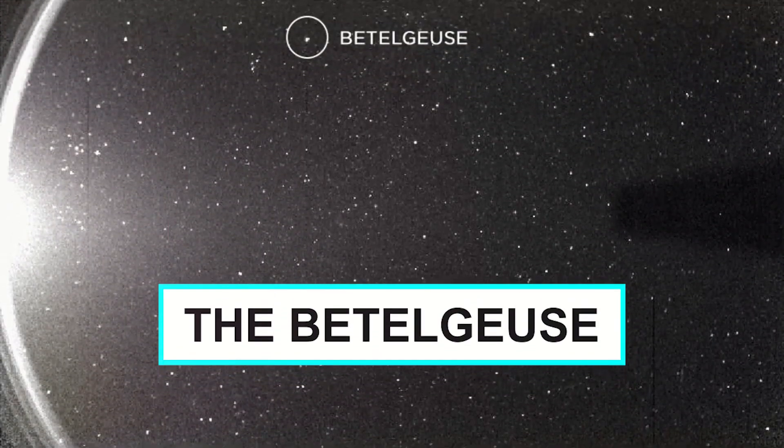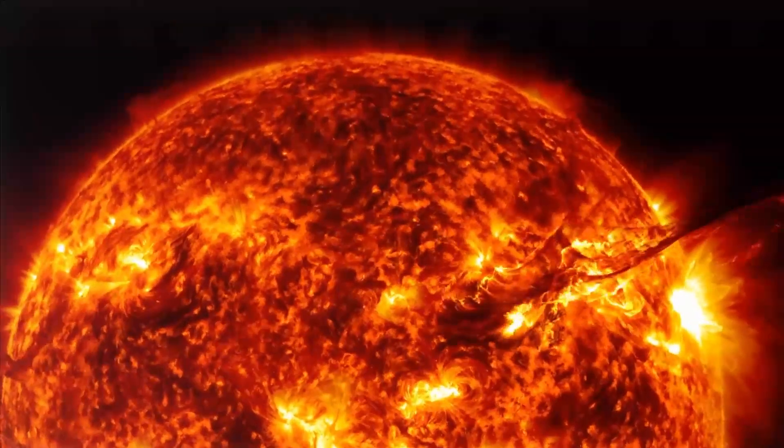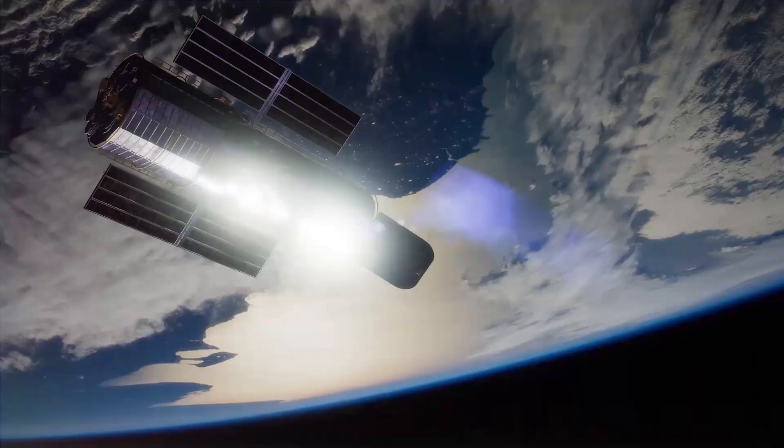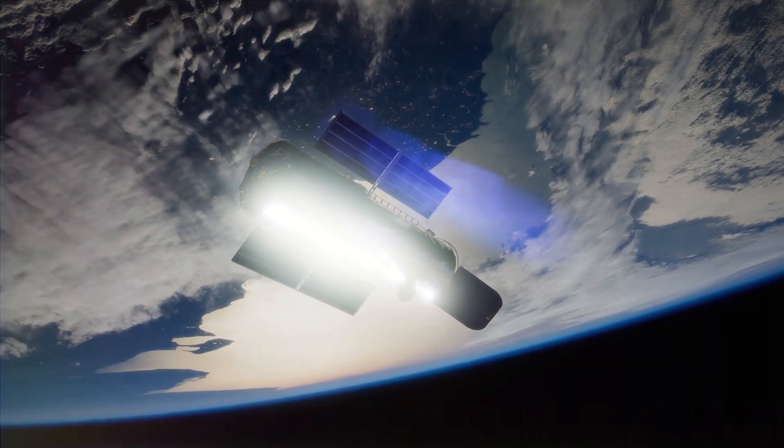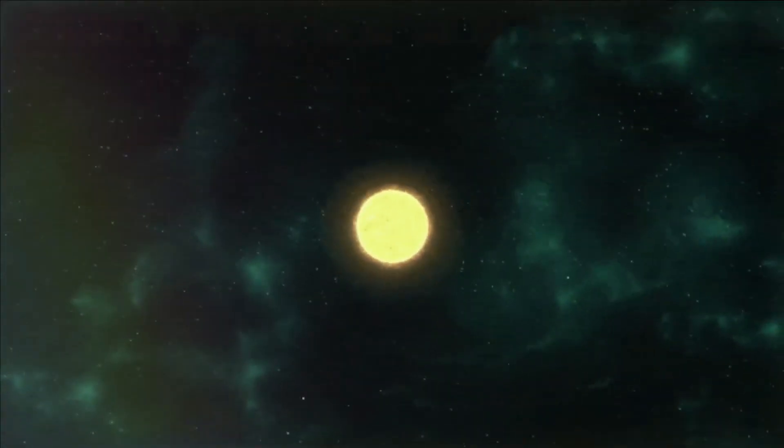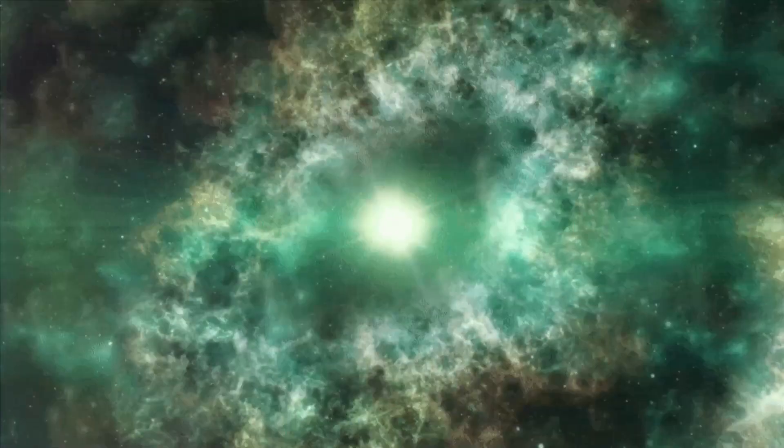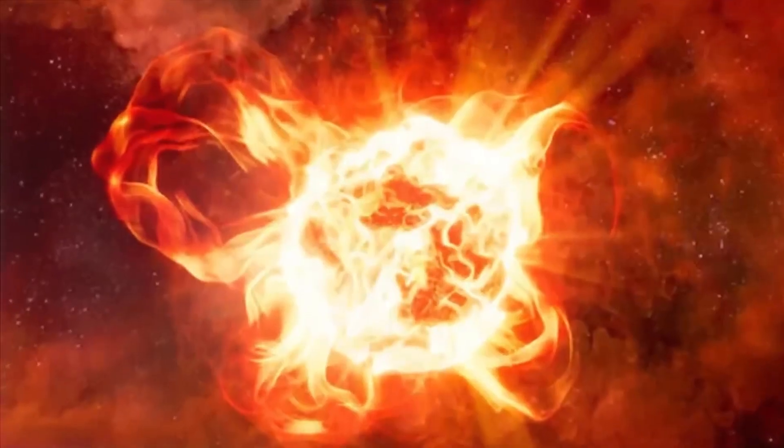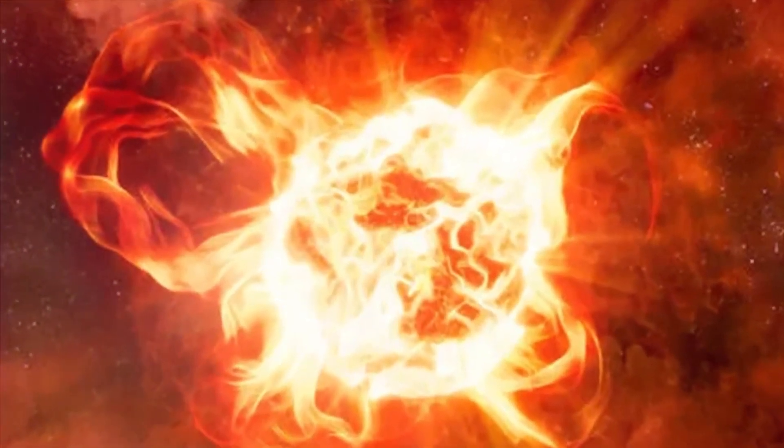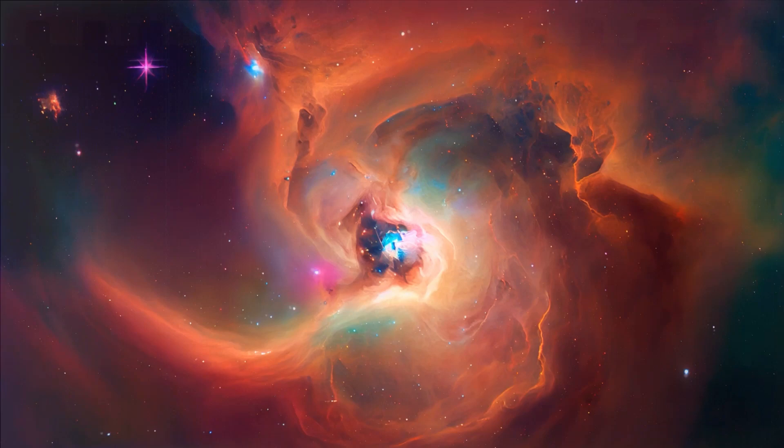Betelgeuse, a red supergiant star located in the Orion constellation, has been the subject of much excitement and speculation in recent years. Scientists have been studying Betelgeuse closely and there have been reports that the star has been dimming rapidly, leading to speculation that it may be about to explode as a supernova. Betelgeuse is located approximately 642.5 light years away from Earth. It is one of the brightest stars in the night sky and its distinctive reddish color makes it easy to identify.